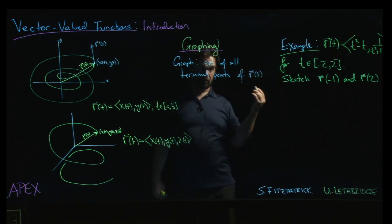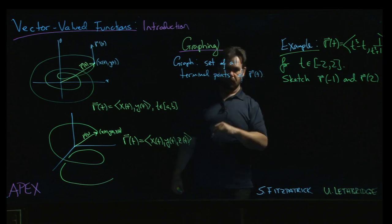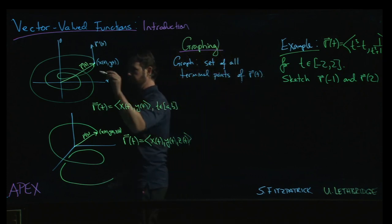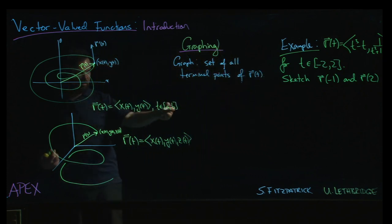So for each value of t, you sketch the vector, you look at the points that are generated by the tip of the vector as t varies over the interval and that's your graph, it's the curve.